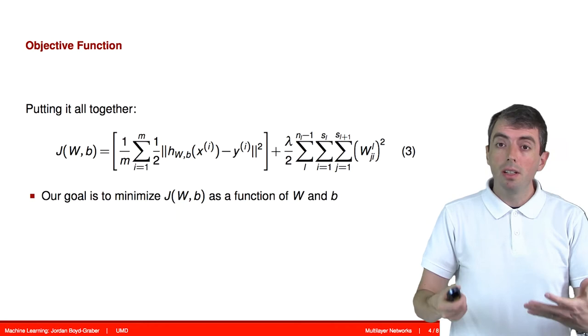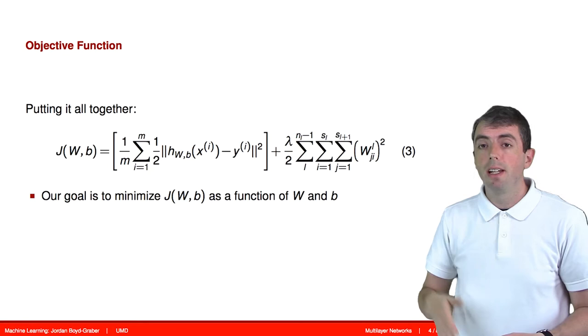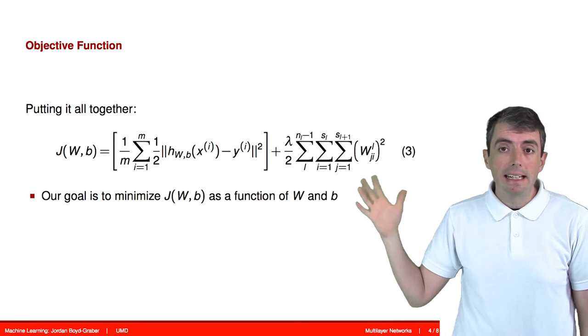A lot of it reuses the same building blocks over and over again. Our goal is to minimize the error as small as possible, and this is a function of the weights and the biases. We want to learn the weights and the biases that cause this function to be as small as possible.